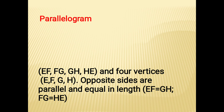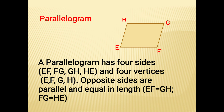The next shape is the parallelogram. This is a parallelogram with vertices E, F, G, and H. It has four sides: EF, FG, GH, and HE, and four vertices. The opposite sides are parallel and equal in length: EF equals GH, and FG equals HE. An example of a parallelogram is an eraser.